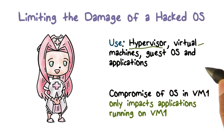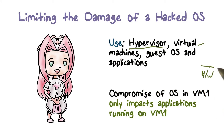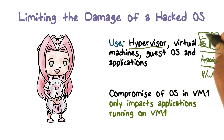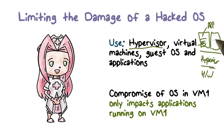If we look at our earlier picture, we have the hardware, then we have the hypervisor, and then we have these virtual machines. This is the OS here, and the application here. A compromise of an OS here only affects the applications in this virtual machine. It doesn't do anything to the application that may be running in a different virtual machine with the same operating system or a different operating system.